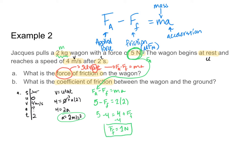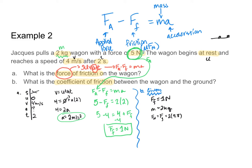For part B, I need the coefficient of friction between the wagon and the ground. My force of friction is one newton and my mass is two kilograms. The normal force equals the force of gravity, which equals two times 9.8, because my wagon is rolling across flat ground — it is not falling through the earth — so the force of gravity must equal the normal force.